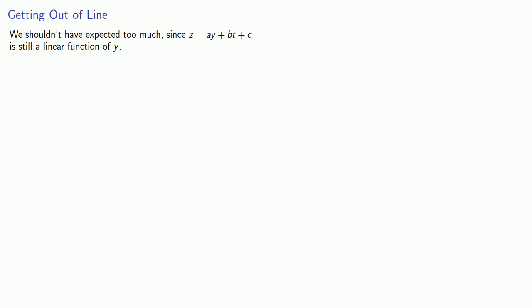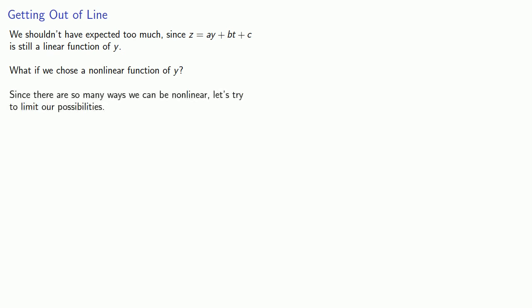In retrospect, we shouldn't have expected too much, since z equals ay plus bt plus c is still a linear function of y. So what if we choose a nonlinear function of y? Since there are so many ways we could be nonlinear, let's try to limit our possibilities.